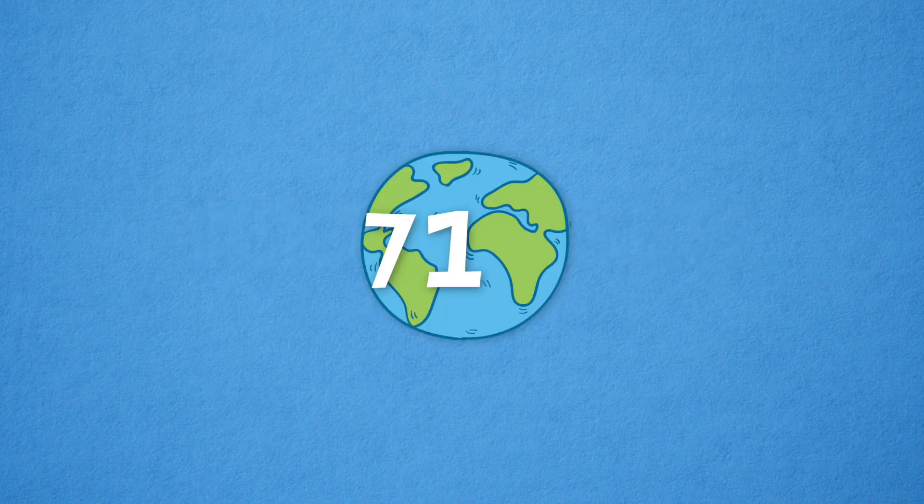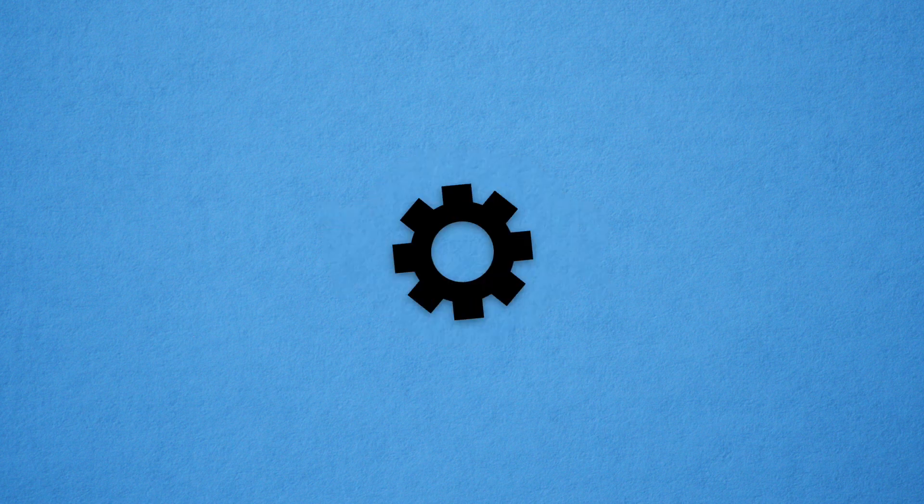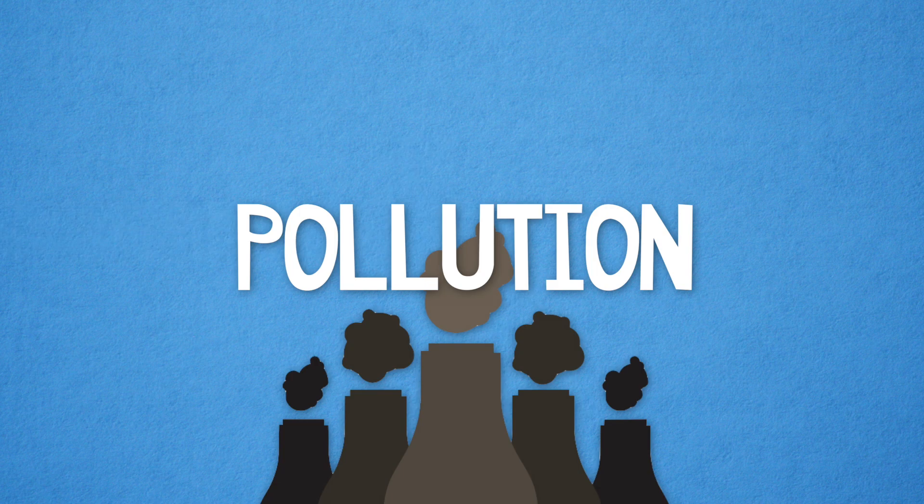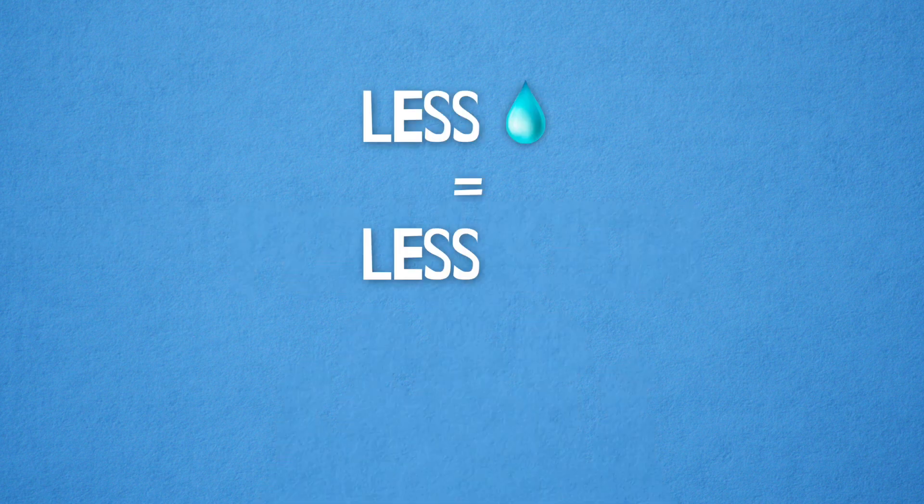Sure, 71% of the earth is covered in water, but it's not all usable. You've got to process the water and then deliver it to homes, which can cause pollution. So, less water equals less pollution, which equals a healthier planet.